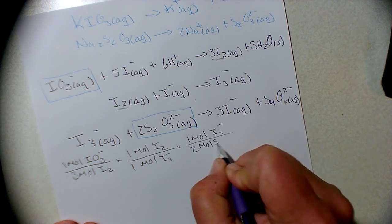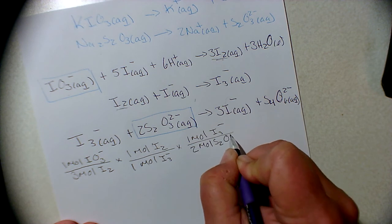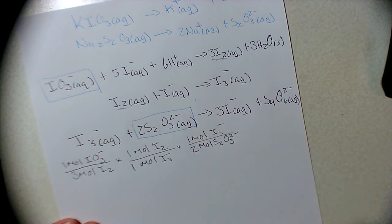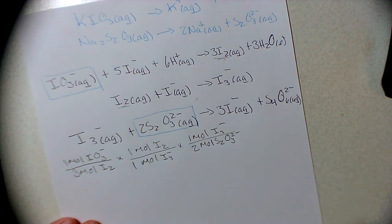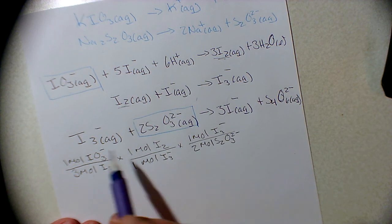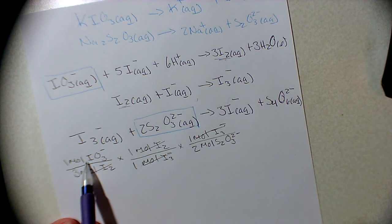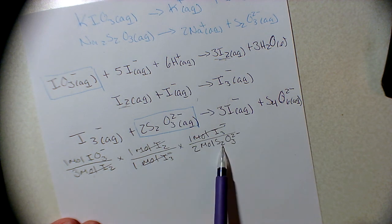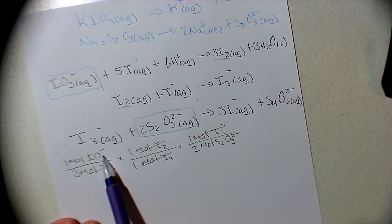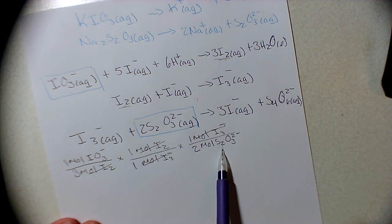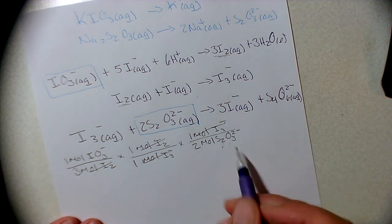The trick with this to know if you've done it right is to check to see if everything cancels out. We have our moles of I2 cancel out, our moles of I3 cancel out, and we're left with a ratio of moles to moles for our iodate to our thiosulfate, which is what we want because we need to predict how many moles we're going to have.